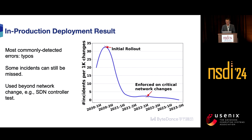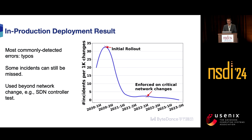The in-production deployment results show we successfully bent the curve after rolling out Crescent, reducing incidents. Unsurprisingly, the most common detected errors in the method of procedure are typos. We still miss some incidents, especially those involving external service providers like ISPs and clouds. Crescent is also used for traffic engineering tests, which is another major use case for our system.